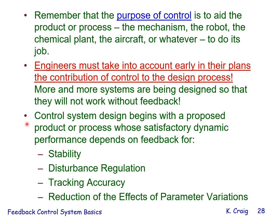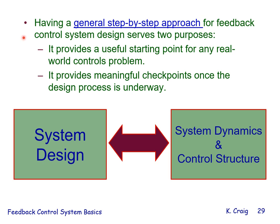Control system design begins with a proposed product or process whose satisfactory dynamic performance depends on feedback for stability, disturbance regulation, tracking accuracy, and reduction of parameter variation effects. Having a general step-by-step approach for feedback control system design serves two purposes: it provides a useful starting point for any real-world controls problem, and it provides meaningful checkpoints once the design process is underway. The system design must include system dynamics and control systems from the very start in an integrated way.